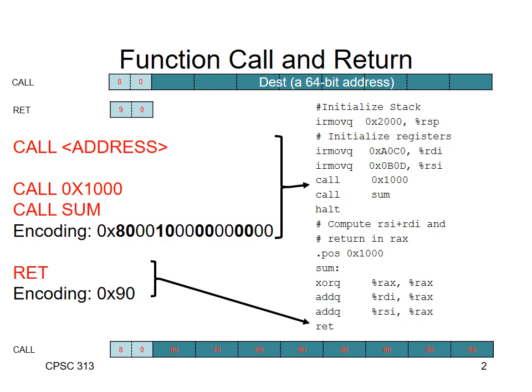Looking at the example code, we set up some registers and then call, in the first case, address 1000, and in the second case, the symbolic address sum. At the bottom of the program, we explicitly set the position of the next bit of code at location 1000, give it the label sum, and execute some instructions. So you can use address hex 1000 or sum interchangeably, and in the simulator both calls do exactly the same thing.